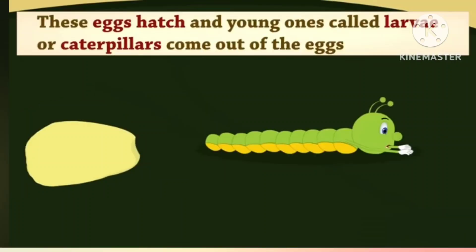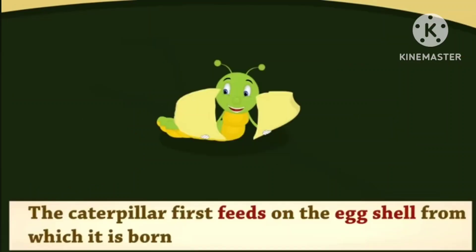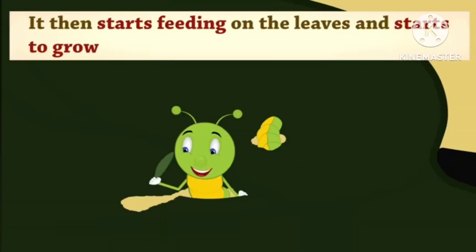These eggs hatch and young ones called larvae or caterpillars come out of the eggs. The caterpillar first feeds on the eggshell from which it is born, then starts feeding on the leaves and starts to grow.